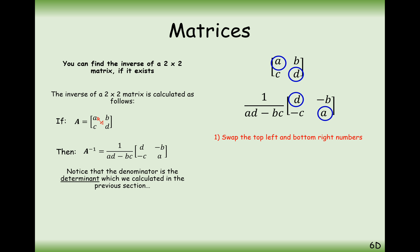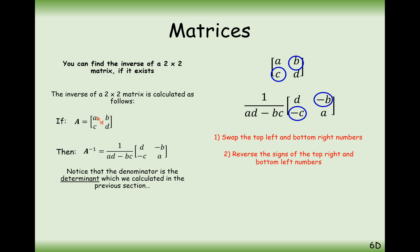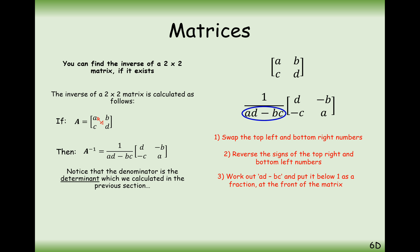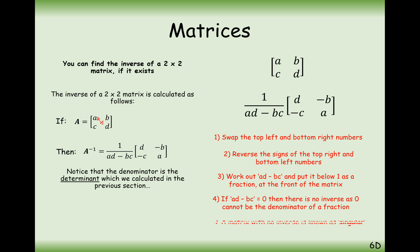Here are the steps. First, we swap over A and D. We negate the other two values. Then we pull out the determinant at the front of the matrix. Generally, we're going to keep it as a scale factor at the front of the matrix. If it's, for example, 1 over 2 and all of the values inside your matrix are even, then it would be a good idea to incorporate that half inside the matrix, but generally my preferred way is to keep the 1 over determinant at the front.